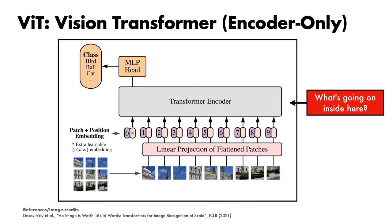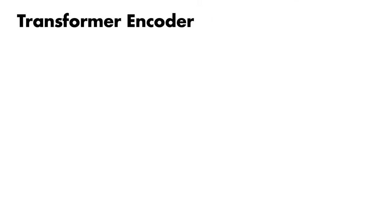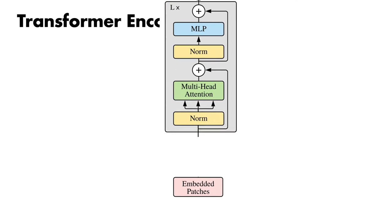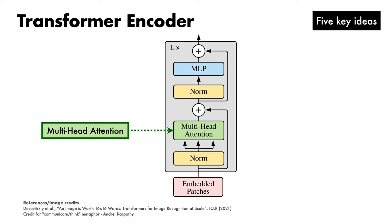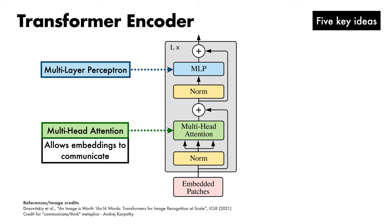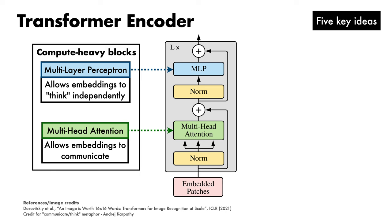We can then pass our sequence of embeddings into a transformer encoder. Finally, we pluck out the embedding from the 0th position and pass it through an MLP, which is used to predict the class of the image. The encoder consists of a stack of transformer blocks, one on top of the other, with information flowing upwards. There are five key ideas we need to understand: the multi-head attention block, and the multi-layer perceptron — the two compute-heavy blocks — plus residual connections and layer normalization, which are included to help the optimization process.